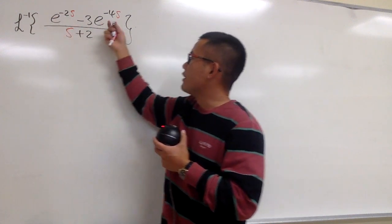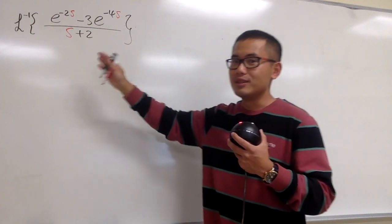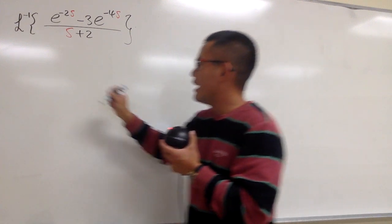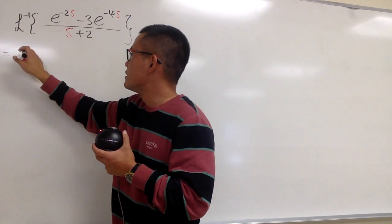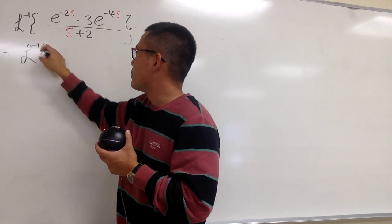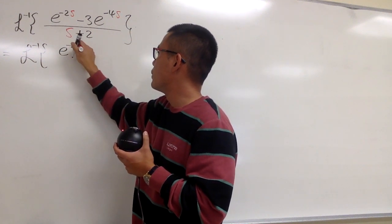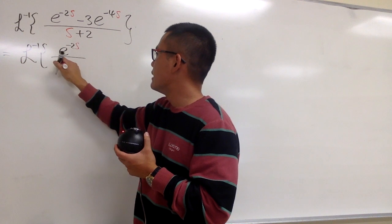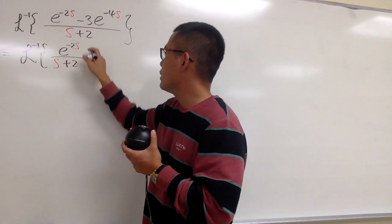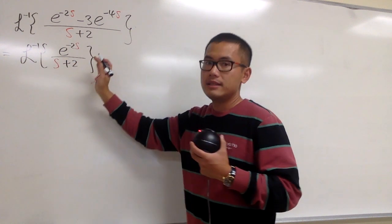This is different than that, so we are going to break this into two partial fractions first. This is the inverse Laplace transform of e to the negative 2s over s plus 2.